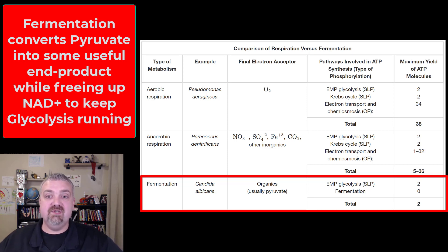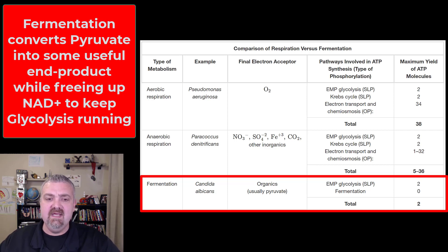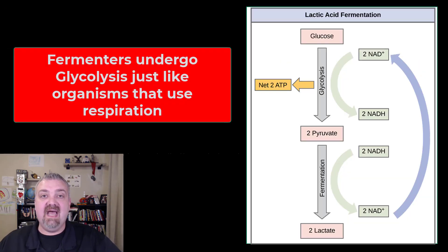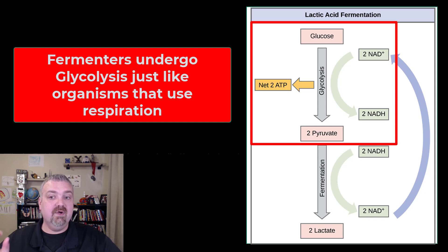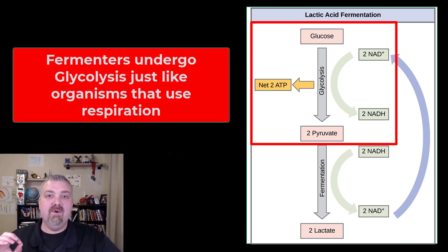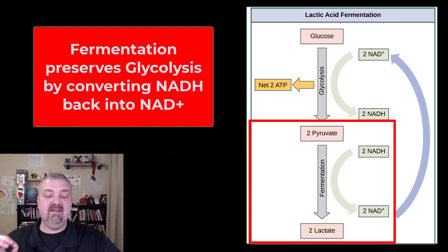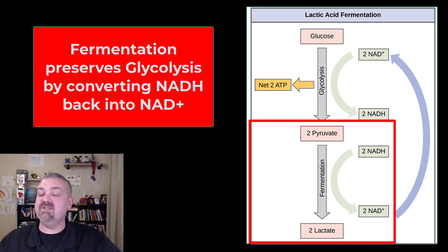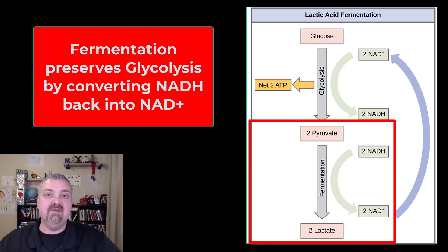So why would we undergo fermentation? What do we need to do with this pyruvate? Fermentation is only going to release those two ATP directly that come from glycolysis. Here's an example of lactic acid fermentation where you convert glucose to pyruvate using glycolysis exactly like we talked about before — net gain of two ATP and you have those two NADHs produced. What fermentation does, as it turns pyruvate into lactate or lactic acid, is liberate those NAD pluses. Fermentation doesn't generate any more ATP directly, but without it we'd run out of NAD plus and we couldn't undergo glycolysis.